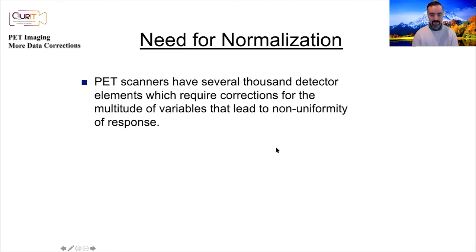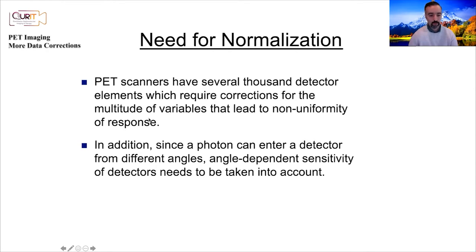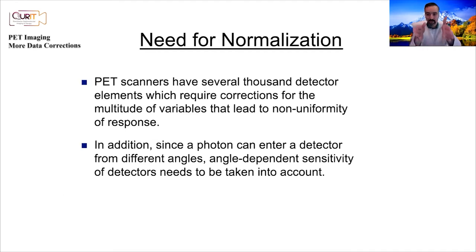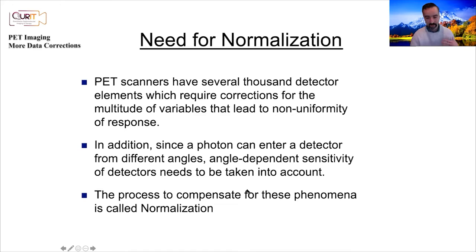PET scanners have several thousand detectors — say 10,000 to 20,000 — and so we should regard corrections that can lead to non-uniformity issues. Since a photon can enter a detector from different angles, especially in PET because there's no collimator, you're coming from many different angles and the cross-section changes. There's angle-dependent sensitivity of the detector, so you really have to correct for these before reconstruction.